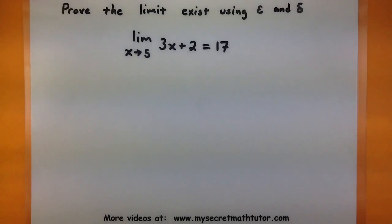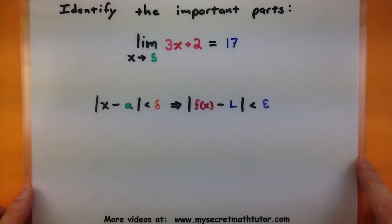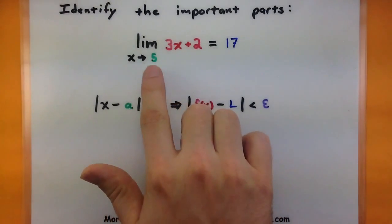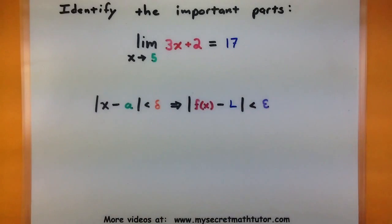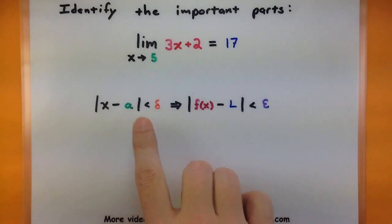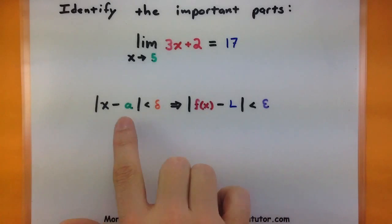When you start off an epsilon and delta argument like this, you definitely want to identify all the important parts. You want to identify the x values you're approaching, your function that you're using, and the limit you are trying to prove. These will be key components in the definition of a limit.